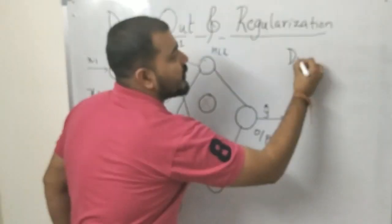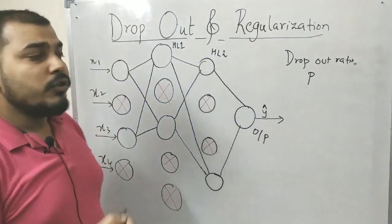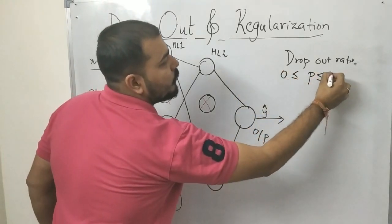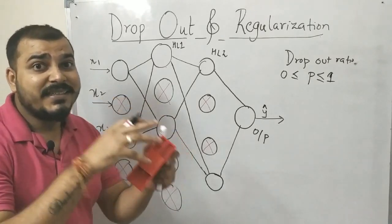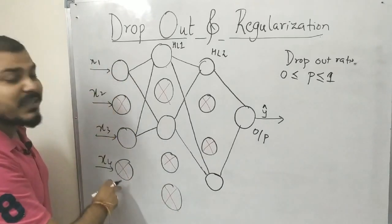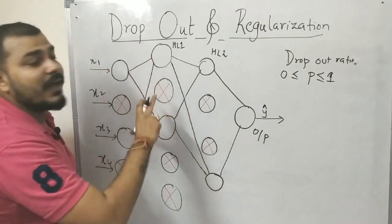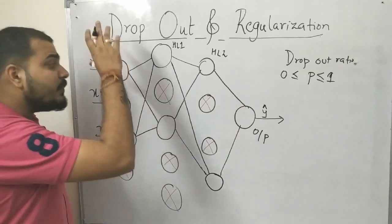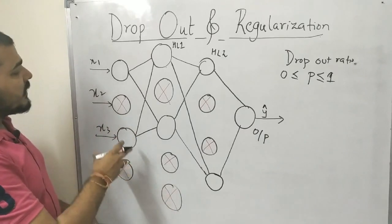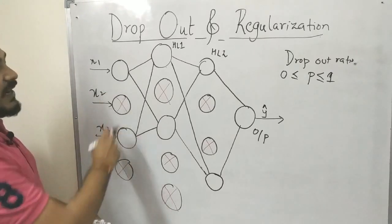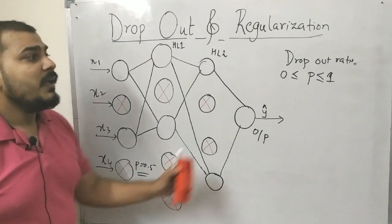To implement the dropout layer, we select a dropout ratio P, where 0 < P ≤ 1. Just as in random forest we selected a subset of features, here we select a subset of features from the input layer and a subset of neurons in each hidden layer — we do not select everything. For example, in the first layer with P = 0.5, two features are inactive and two are active.